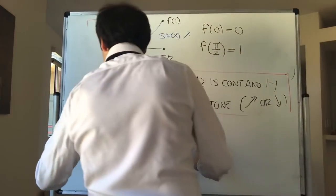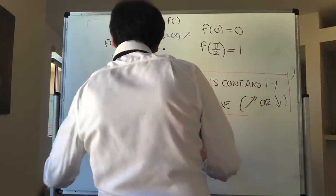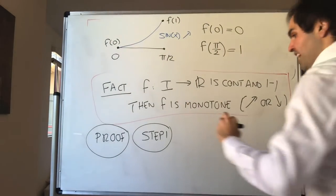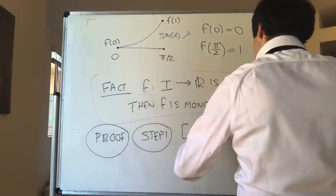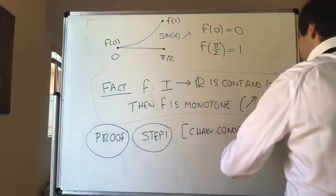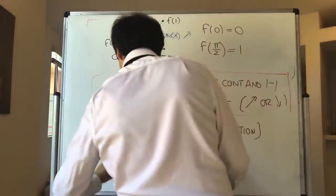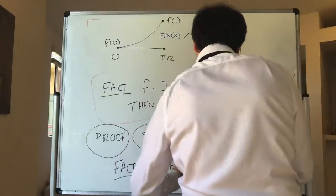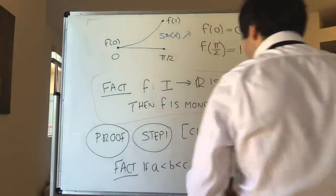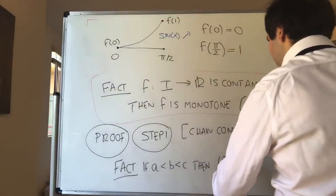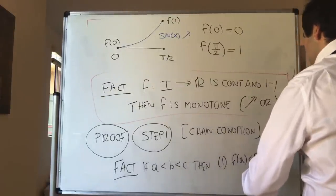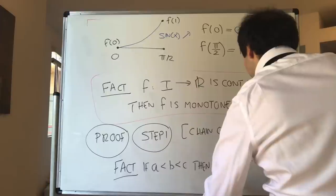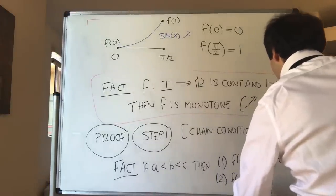Proof, and it goes in a bunch of steps. Step one: I want to prove what I like to call the chain condition. You will see why it's called like that. The claim is: if you have a triple a less than b less than c, then one of the following holds — either f of a is less than f of b is less than f of c, or f of a is bigger than f of b is bigger than f of c.